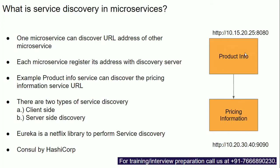During startup, the product information microservice and the pricing information microservice register themselves with an entity called service discovery. Service discovery will then have the address of both microservices. Using service discovery, you can get the address of any other microservice.